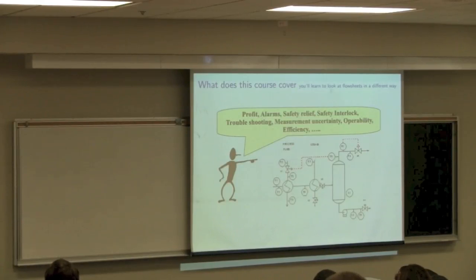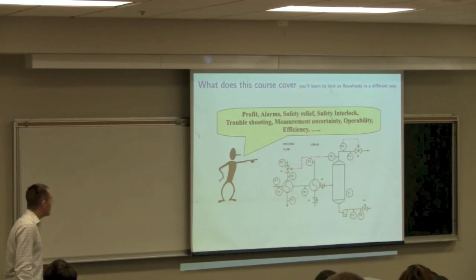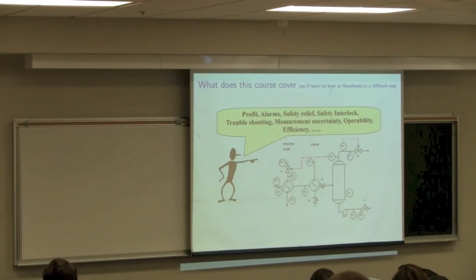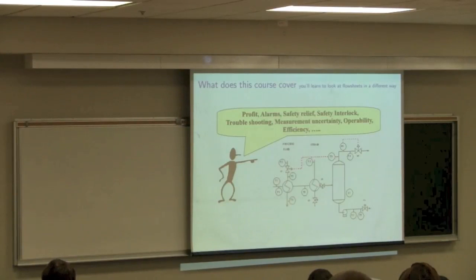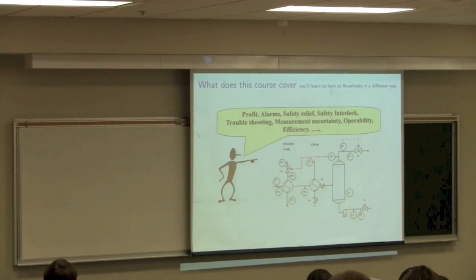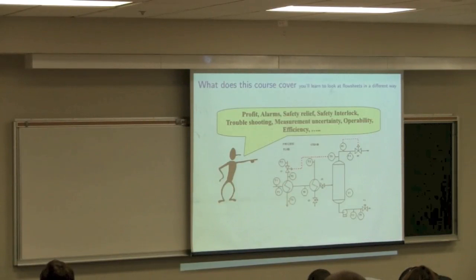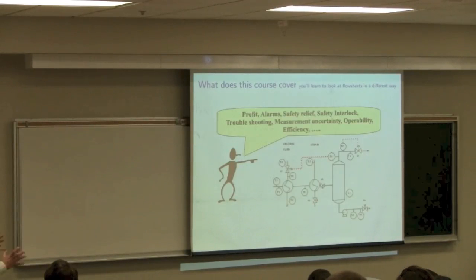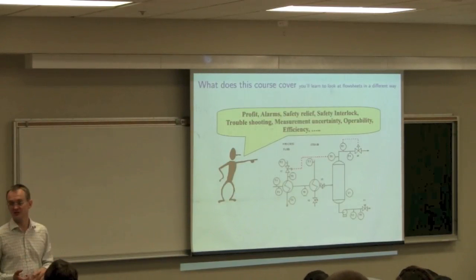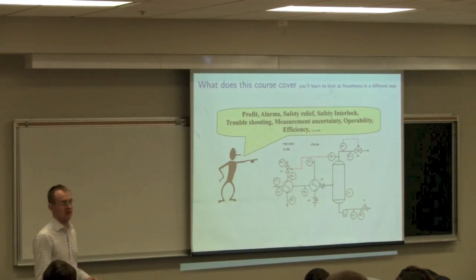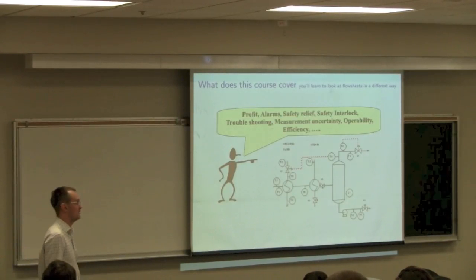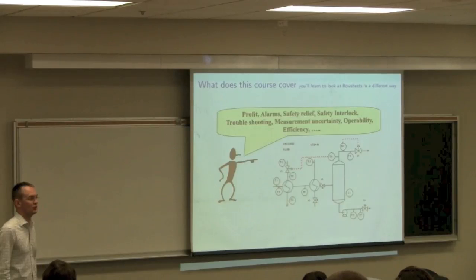We're going to look at how we can instrument that flow sheet to make it reliable and safer — how to use process control to enforce safety. What can we do when things go wrong? We'll have troubleshooting case studies where you have 25 minutes to solve the problem. The key emphasis here is that we're bringing together all your science-based courses: vapor-liquid equilibrium, reactor design, process separations, process control, thermodynamics, heat transfer, and fluid dynamics. All of these are critical to succeed in this class.